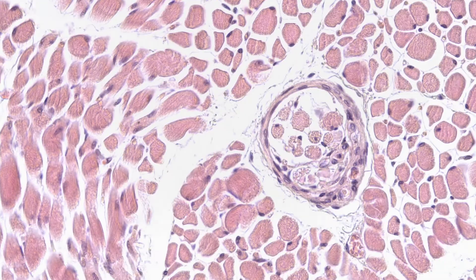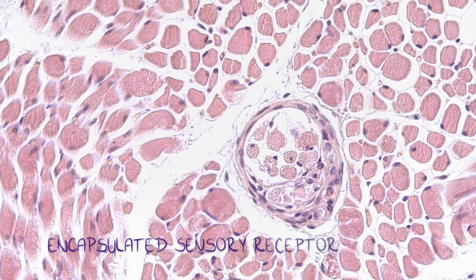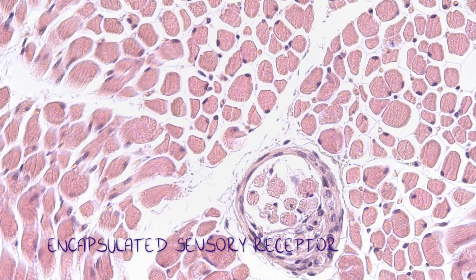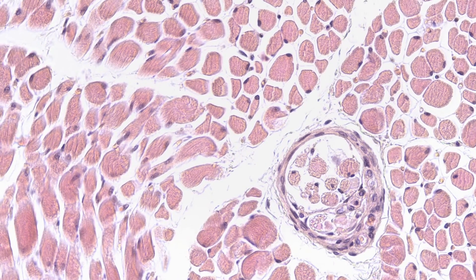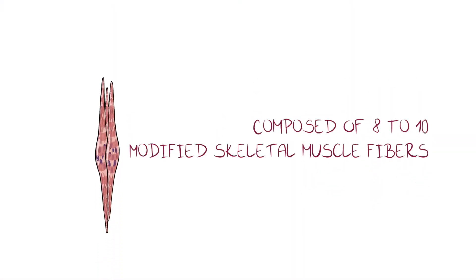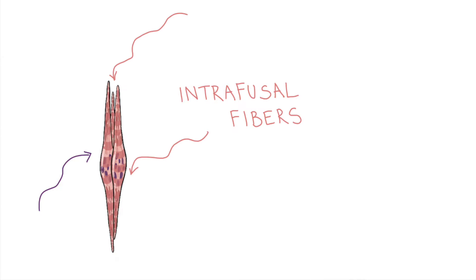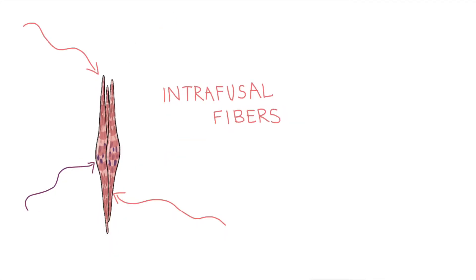The muscle spindle is an encapsulated sensory receptor, about 6 mm long, composed of 8 to 10 modified skeletal muscle fibers, called intrafusal fibers.